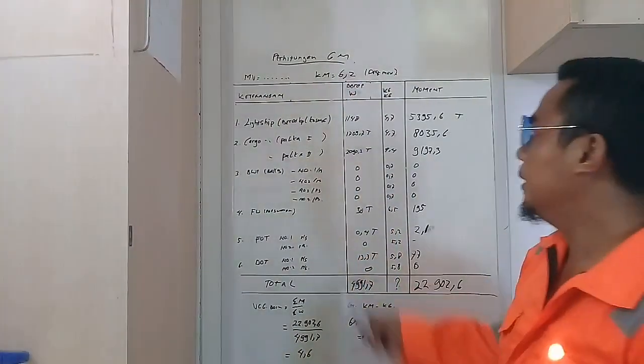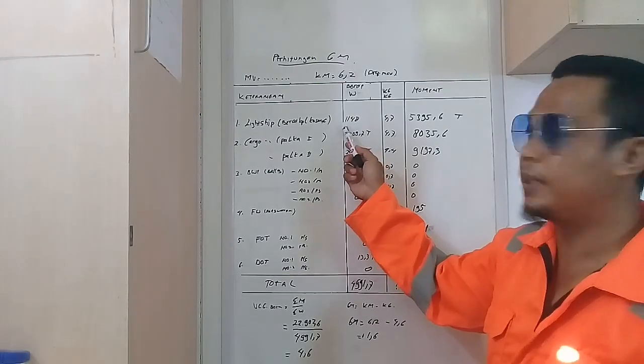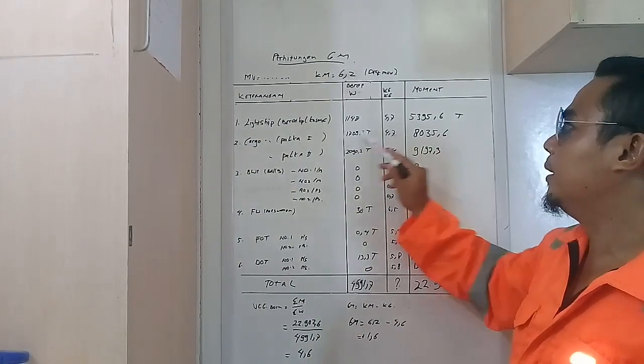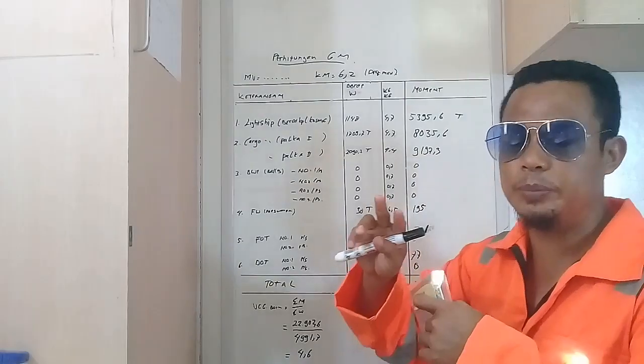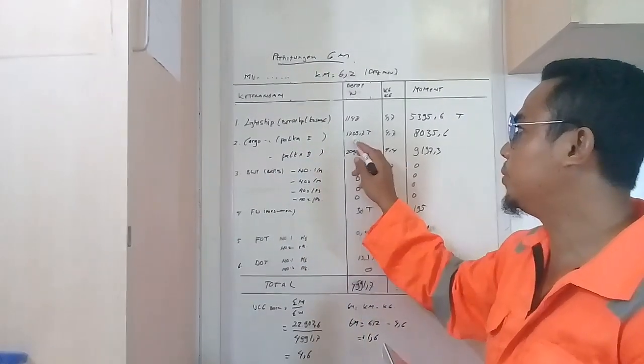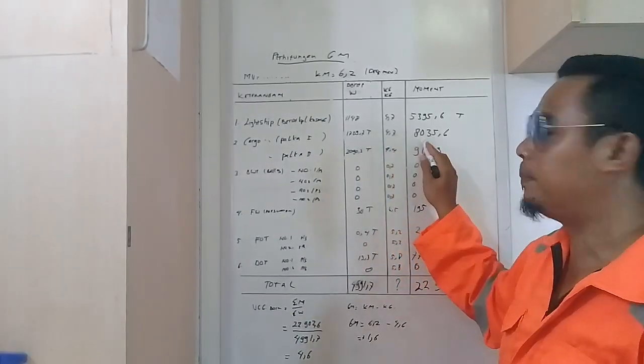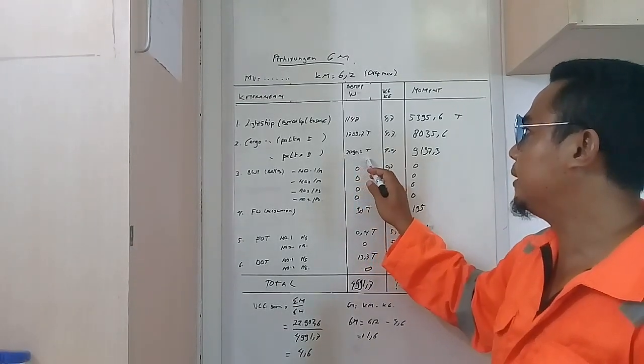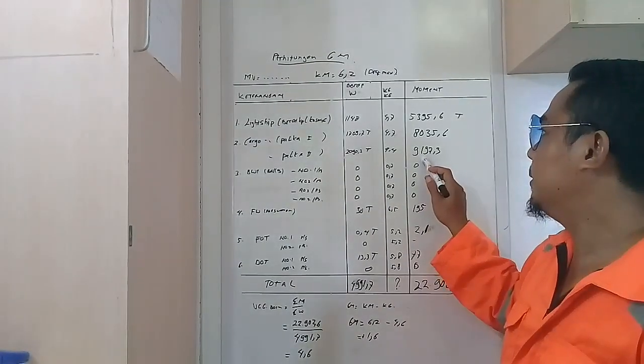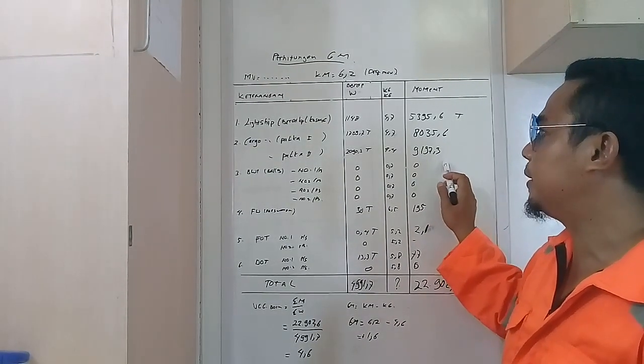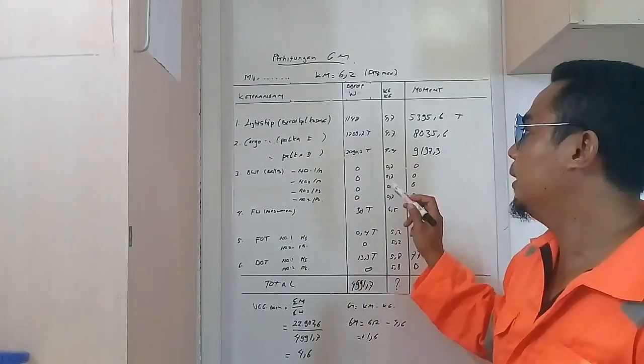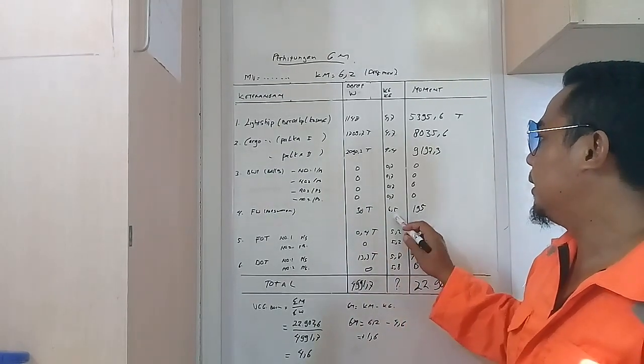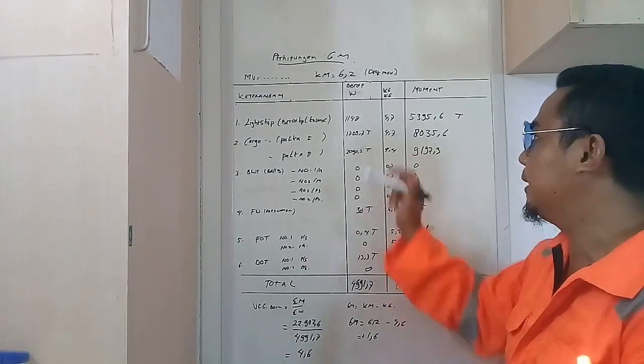Berat kapal kosong kami 1.148, di mana KG-nya 4,7, kita kalikan dapat 5353,6. Begitu juga palka 1, kita mempunyai stowage plan palka 1 sekitar memuat 1.299,7, KG-nya 4,7, dapatnya momen 6.108,6. Palka 2: 2.090,3 ton, KG-nya 4,4, momennya 9.197,3. Balasnya harus kosong, berarti 0,0,0. Fresh water juga 30 ton, KG-nya 6,5, 195 didapat dengan perkalian.